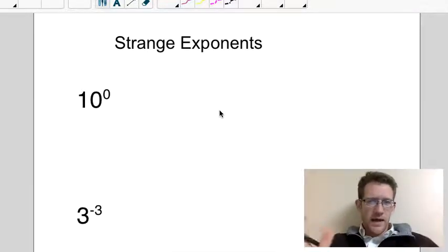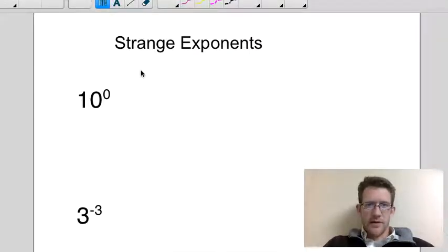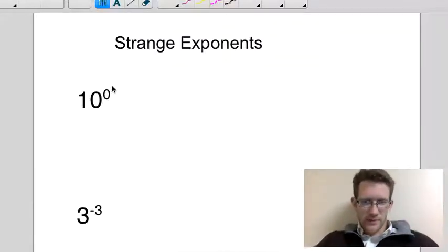We're going to take a look at some of the weird exponents, the fringe, strange ones that are kind of out there. And the first one we're going to look at is to the zeroth power. So what does it mean to have some value to the zeroth power exponent?